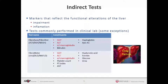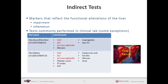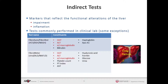Indirect tests are markers that reflect functional alterations of the liver — impairment and inflammation. These include GGT, ALT, alpha-2-macroglobulin, bilirubin, haptoglobin, and ApoA1. These indirect markers, which are generally easy to measure in a clinical chemistry lab, are also common to FibroSure and FibroMeter — the ones highlighted in red are in common between the two assays, though each assay also has its own individual components.